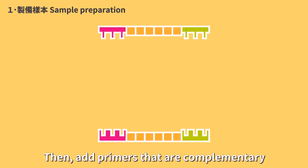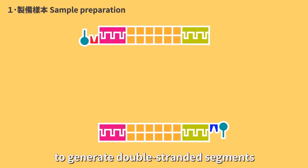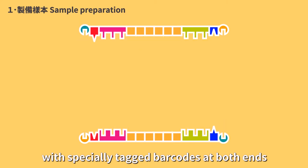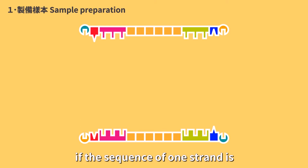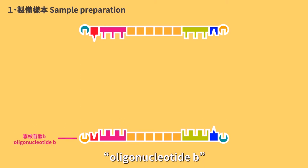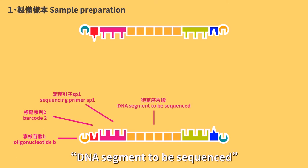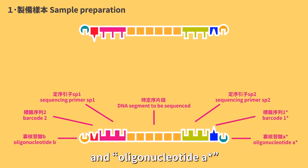Then, add primers that are complementary to the adapters to perform reduced cycle PCR to generate double-stranded segments with specially attached barcodes at both ends, representing a complementary sequence by star. If the sequence of one strand is oligonucleotide B, barcode 2, sequencing primer SB1, DNA segment to be sequenced, sequencing primer SB2, barcode 1 star, and oligonucleotide A star, the other strand should be: